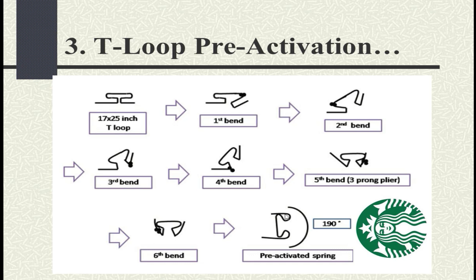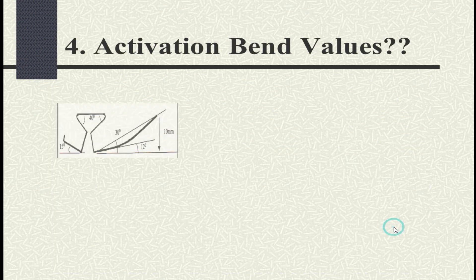If we examine the bend intensity, how much bend is given, the three-prong plier is used to give a kind of continuous curve — which is actually not possible with that plier alone. You will find these diagrams in authentic standard textbooks, but it is quite doubtful how a continuous curve can be produced by three-prong plier, since that can only be done with an arch-contouring plier. The net result will not look like the Starbucks logo shown.